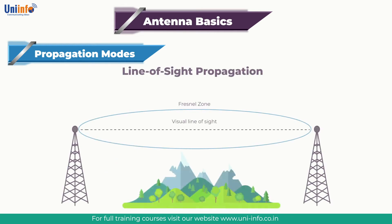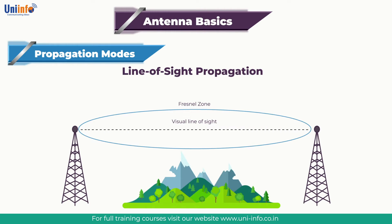Next is Line-of-Sight Propagation. In free space, electromagnetic waves are modelled as propagating outward from the source in all directions, resulting in a spherical wave front. Such a source is called an isotropic radiator and, in the strictest sense, does not exist. As the distance from the source increases, the spherical wave front converges to a planar wave front over any finite area of interest, which is how the propagation is modelled. The direction of propagation at any given point on the wave front is given by the vector cross-product of the electric field E and the magnetic field H at that point. The polarisation of a wave is defined as the orientation of the plane that contains the E field.